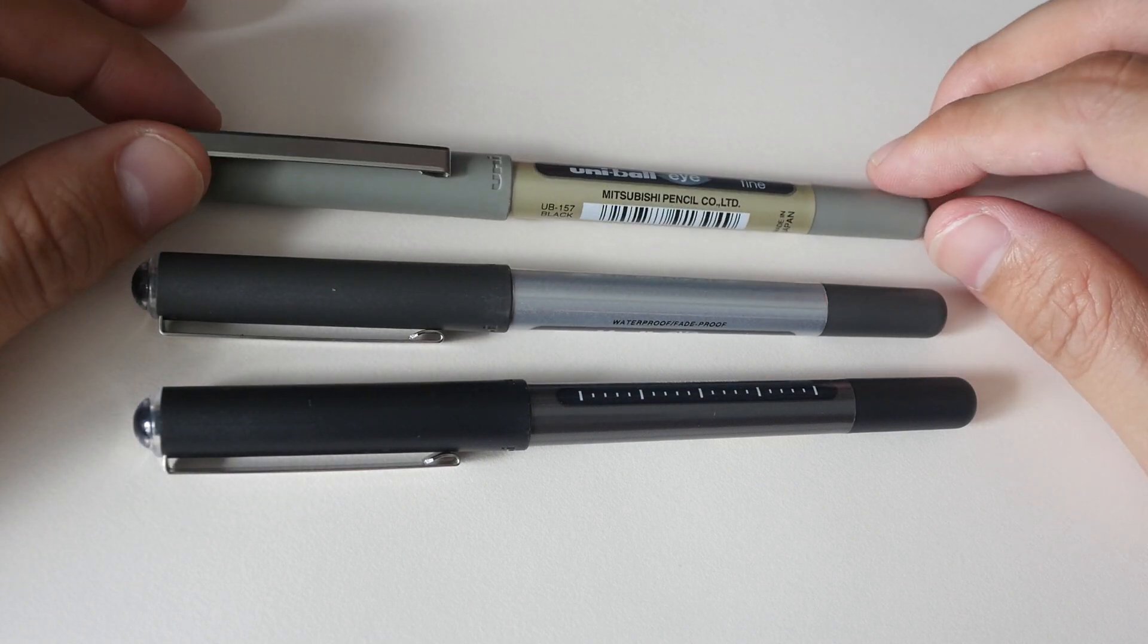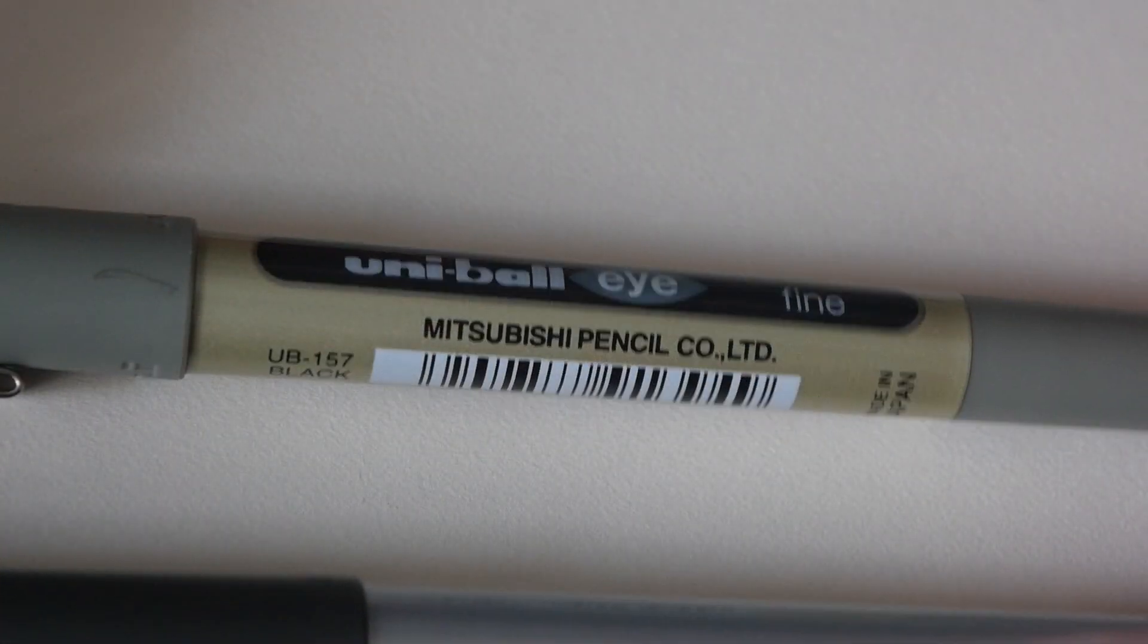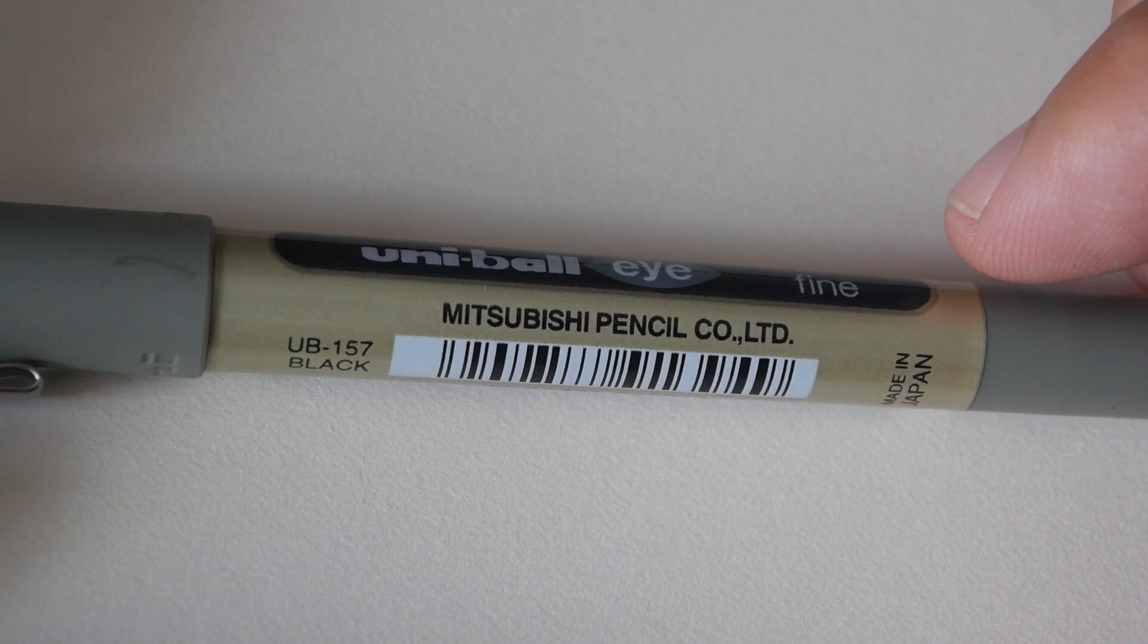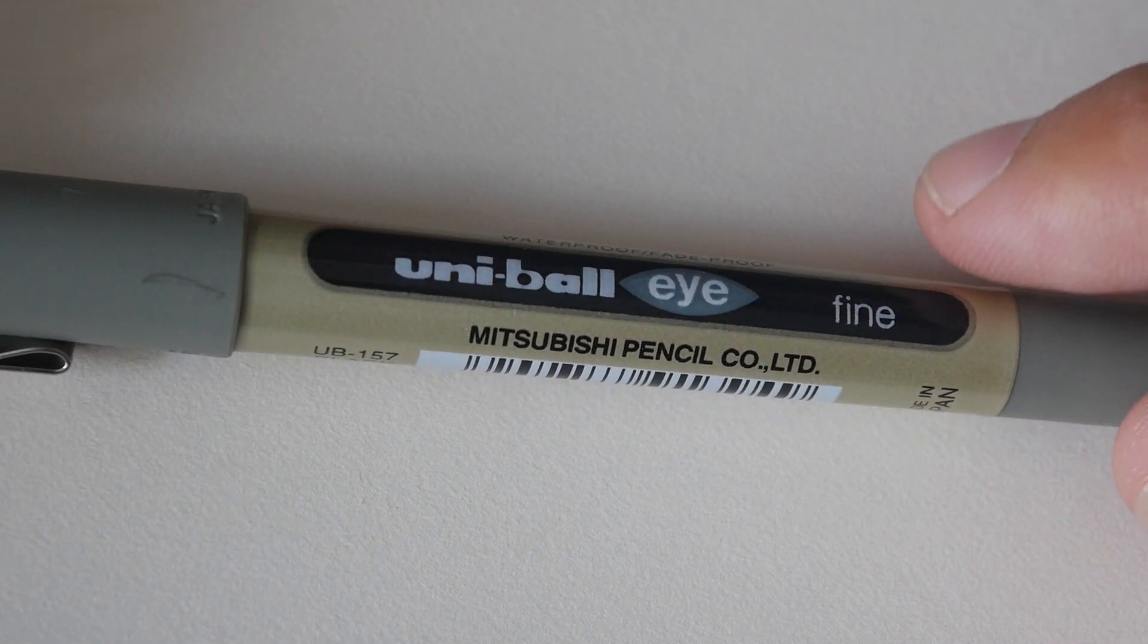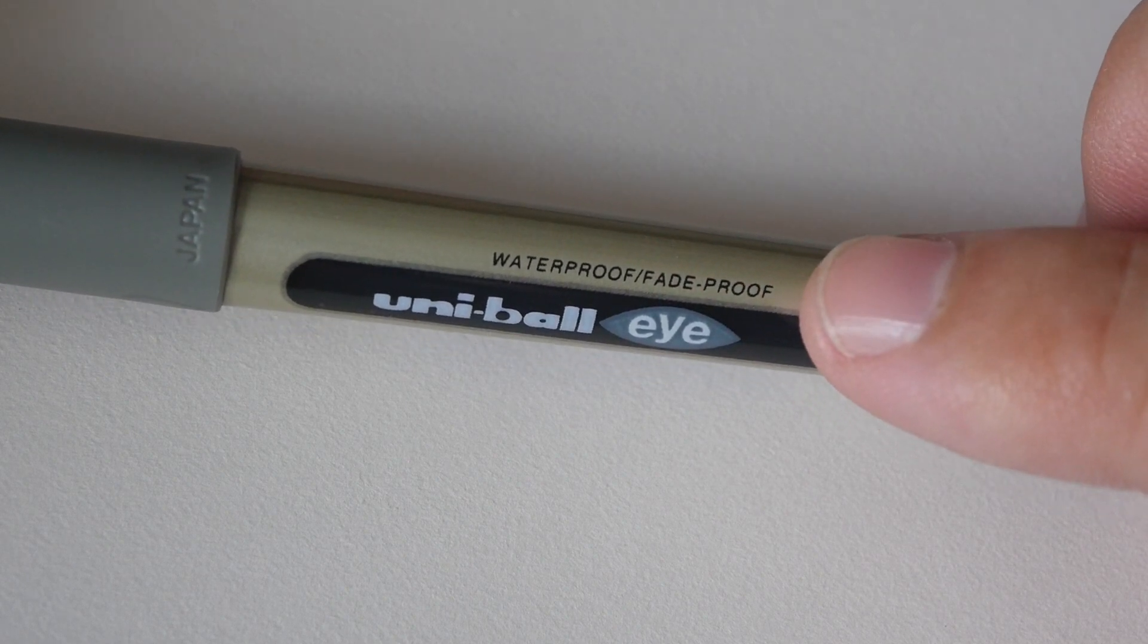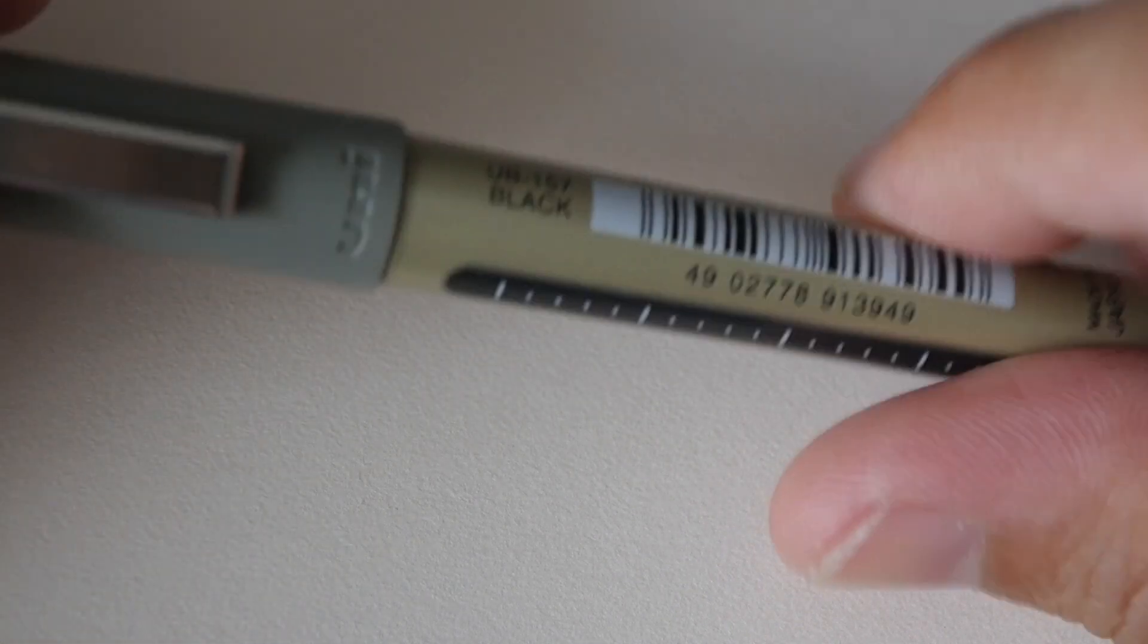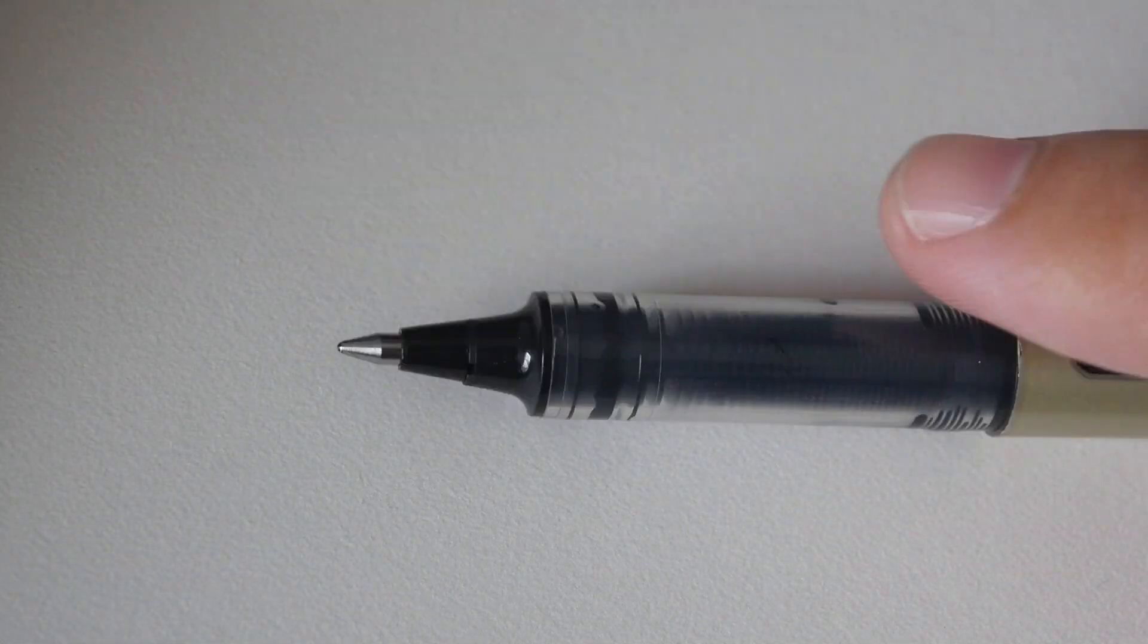Uniball Eye is made by this Japanese company called Mitsubishi Pencil. This is a company that makes a lot of other pens and what's so special about the Uniball Eye is this pen here uses waterproof and fade proof ink. Inside is actually liquid ink and it comes out from this roller ballpoint tip here.